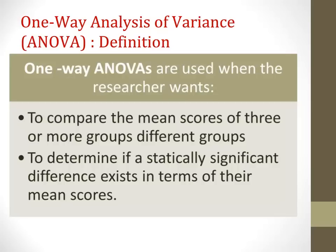Before we move on, it's important to talk about why not do multiple t-tests. A t-test, which is based on the standard error of the difference between the two means, can be used to test differences when you have two groups. When there are more than two means, it is actually possible to compare the means using multiple t-tests. However, an ANOVA is more robust because conducting multiple t-tests can lead to a severe inflation of a type 1 error rate. An ANOVA can test differences among several group means without increasing the type 1 error rate, making a one-way ANOVA the best choice to compare the mean scores of three or more groups.